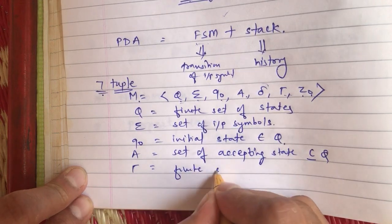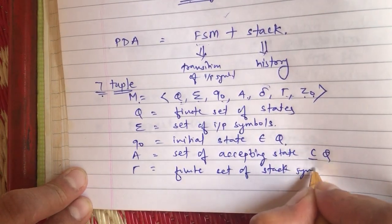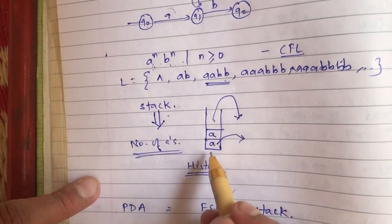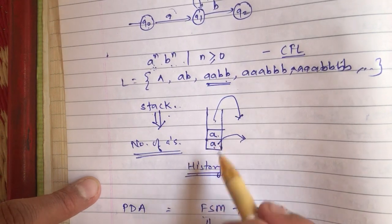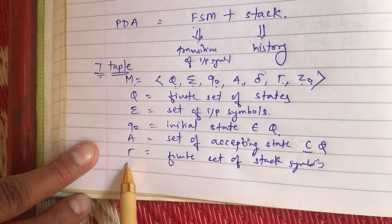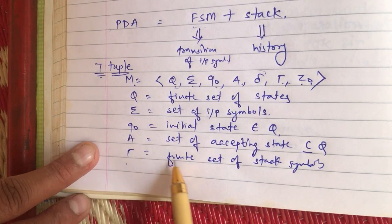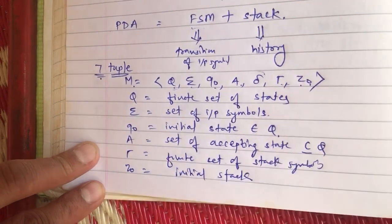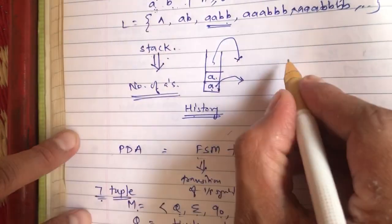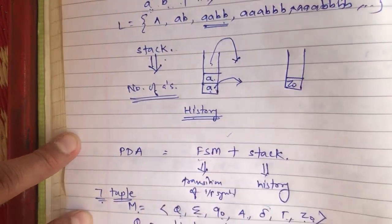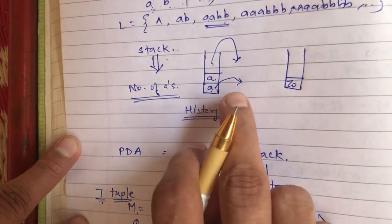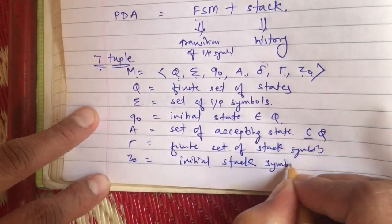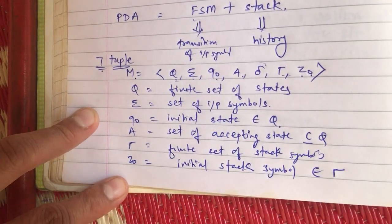Γ (Gamma) is something new in PDA that was not in finite state machines — it is the finite set of stack symbols. The stack comprises certain symbols; for example, 'a' is an element of Γ, so Γ represents all symbols that can appear in the stack. Z0 is the initial stack symbol — initially the stack contains only Z0 before any processing begins. As we perform push and pop operations, Z0 remains the base. Since Z0 is the initial stack symbol, it belongs to Γ.